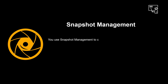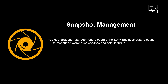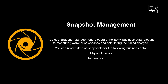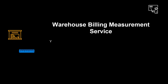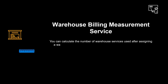To understand warehouse billing, we need to cover some basic concepts. You use snapshot management to capture the EWM business data relevant to measuring warehouse services and calculating the billing charges. You can record data as snapshots for the following business data: physical stocks, inbound deliveries, outbound deliveries, and warehouse tasks. You can calculate the number of warehouse services used after assigning a warehouse billing measurement service to an item in a request for warehouse billing measurement document.